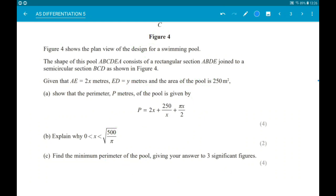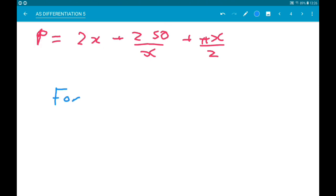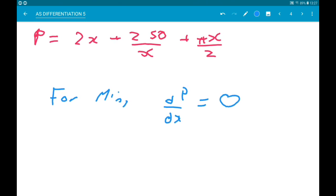In part c, we just find the minimum perimeter of the pool, giving around that 2, 3, 6, 6. So again, for a minimum, dP/dx must equal 0. So let's differentiate. We are going to get 2. Now, 250 over x is 250x^(-1). That's going to differentiate to minus 250 over x². And then πx over 2 is going to be π over 2.